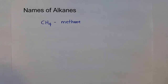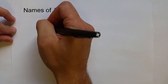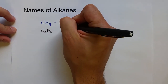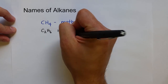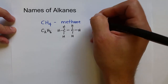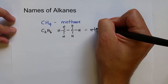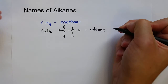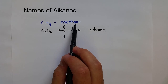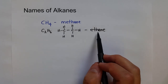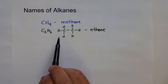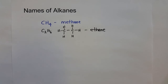The second is C2H6, or CH3CH3, and that is ethane. As you can see, each of the alkanes, or each of these hydrocarbons, end with -A-N-E. That is to indicate that they're alkanes — they contain only carbon and only hydrogen, and also only contain single bonds.